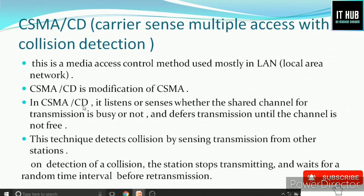In CSMA/CD, it listens or senses whether the shared channel for transmission is busy or not. The node first senses that the channel is free or busy. If it is busy, it waits for a random amount of time until the channel is free. If the channel is free, it starts transmission. That's why it's called Carrier Sense — here you can sense the carrier.